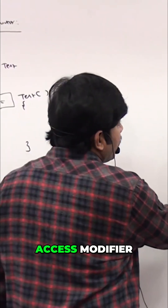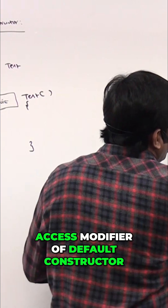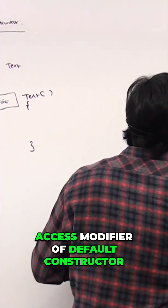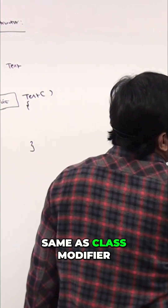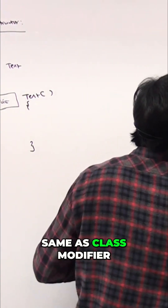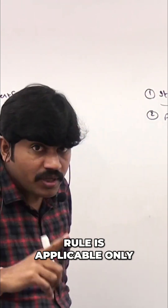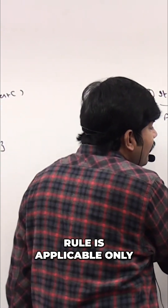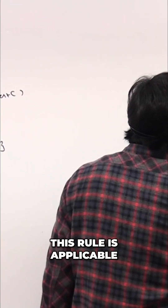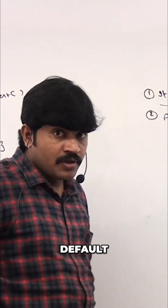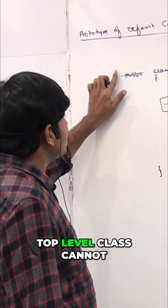What is the second rule? The access modifier of a default constructor is the same as the class modifier. But make sure this rule is applicable only for public and default. What is the reason for that? A top-level class cannot be private.